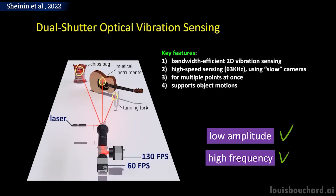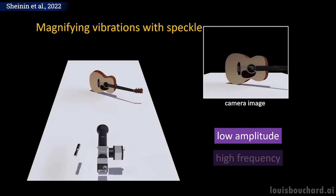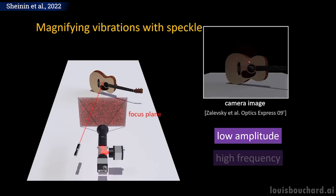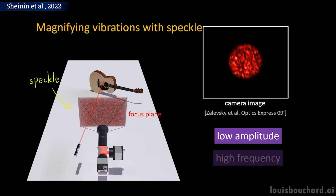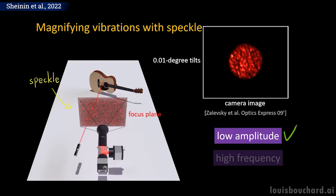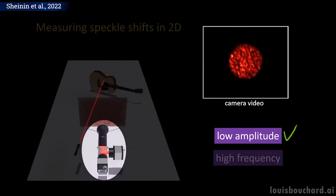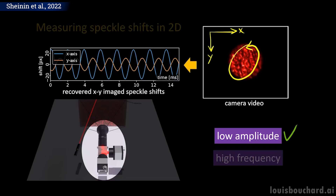They do not simply record the instruments and send the video to a model that automatically creates and separates the audio. They first need to understand the laser they receive and process it correctly. They orient a laser on the surface to listen to. Then, this laser bounces from the surface into a focus plane. This focus plane is where we will take our information from, not the instruments or objects themselves. So we will analyze the tiny vibrations of the objects of interest through the laser response, creating a representation like this. This two-dimensional laser response pattern, captured by our cameras, is called a speckle, and is then processed both globally and locally using our two cameras.